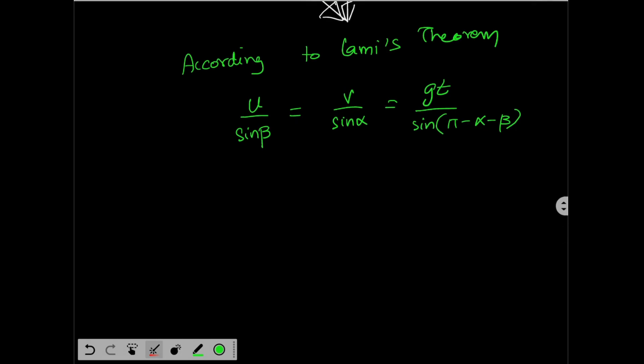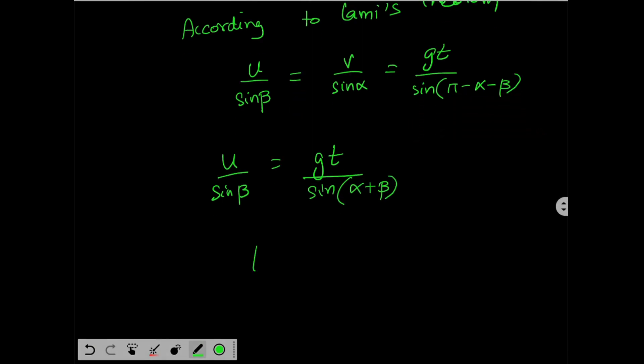but the question is asking for time of flight. So, we will just write down u divided by sine beta will be gt divided by sine of pi minus alpha minus beta will be sine of alpha plus beta. So, I get time of flight will be u sine alpha plus beta by g sine beta. That's it. This is your answer.